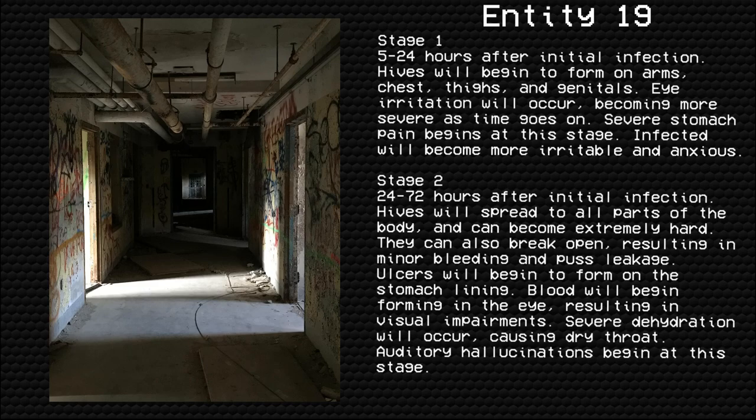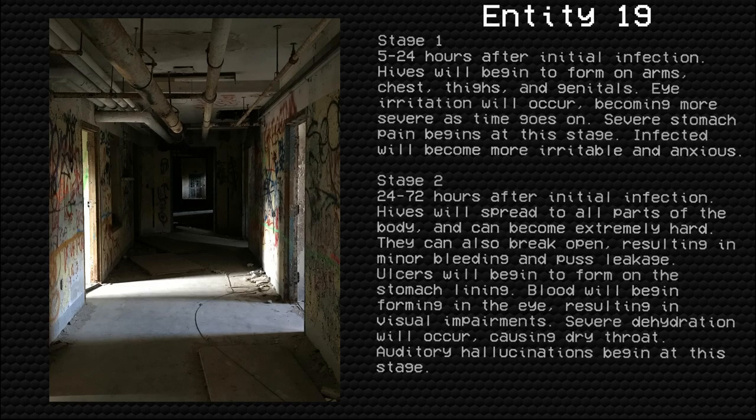Stage 2: 24 to 72 hours after initial infection. Hives will spread to all parts of the body and can become extremely hard. They can also break open, resulting in minor bleeding and pus leakage. Ulcers will begin to form on the stomach lining. Blood will begin forming in the eye, resulting in visual impairments. Severe dehydration will occur, causing dry throat. Auditory hallucinations begin at this stage.